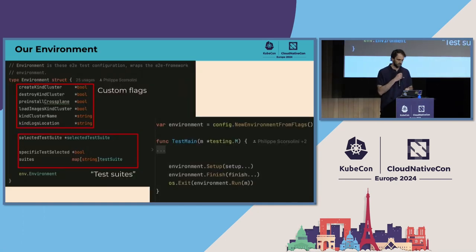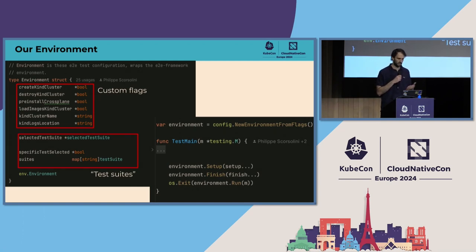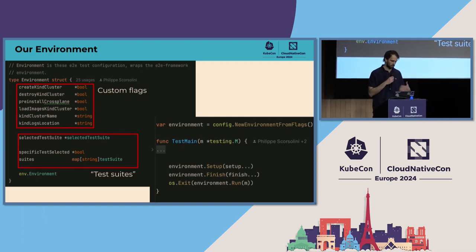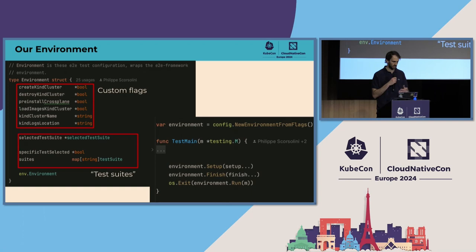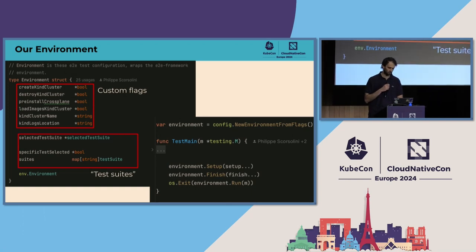We extended the environment to add a few custom flags, mostly to handle kind and how to set up the cluster and how to handle failures. We also introduced an additional concept of test suites, which we'll talk more about shortly. From the test main, it's just a matter of adding a list of setup steps, a list of finish steps, and then running the whole thing.